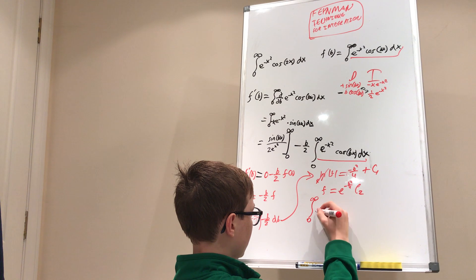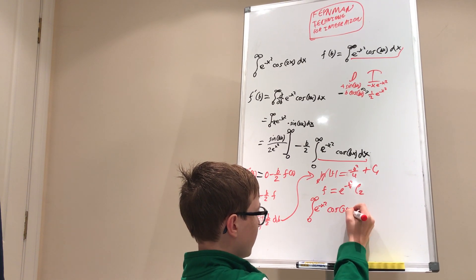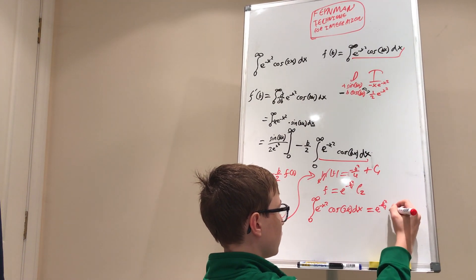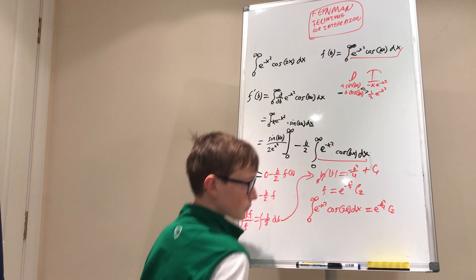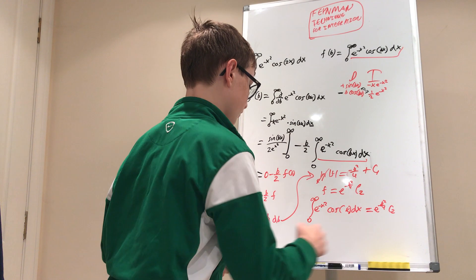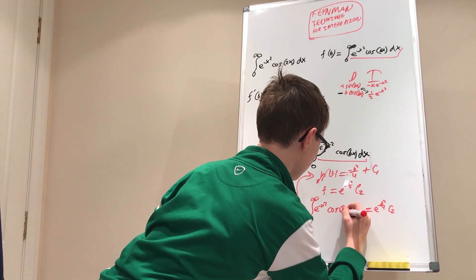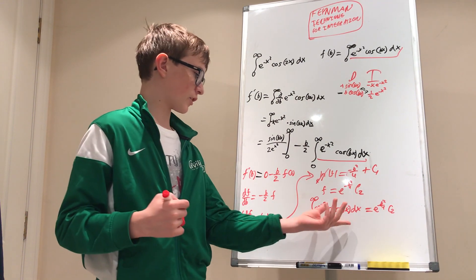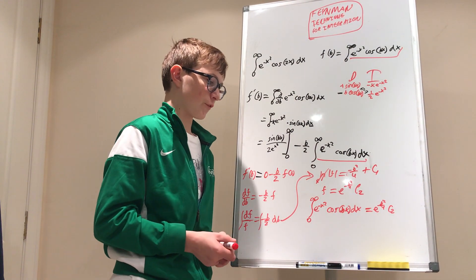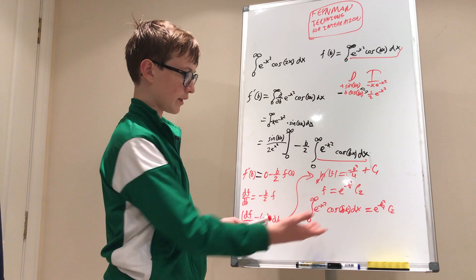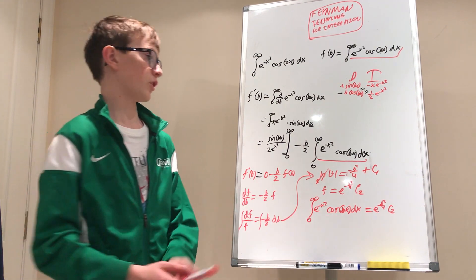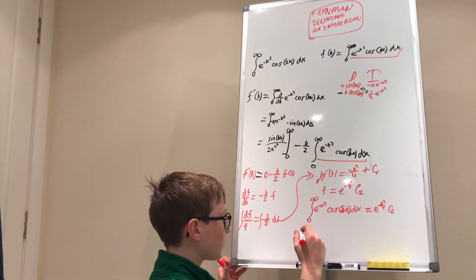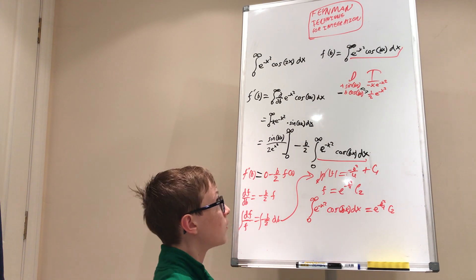This means the integral between 0 and infinity of e to the negative x squared times cosine of bx dx equals C₂ times e to the negative b squared over four. To find C₂, we can let b equal zero on both sides, which conveniently makes the exponential term equal to one. So the integral between 0 and infinity of e to the negative x squared dx equals C₂.